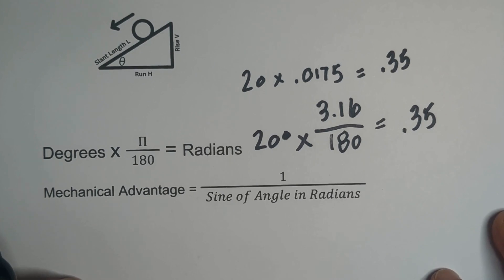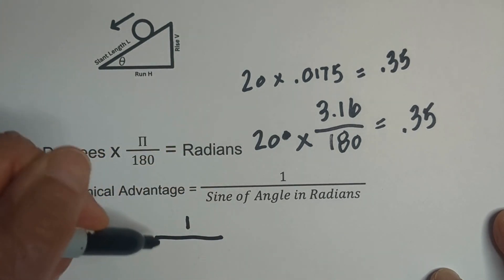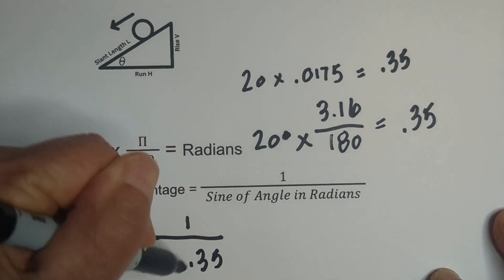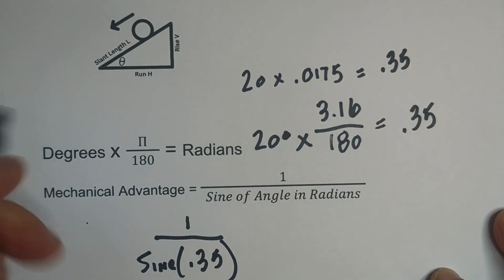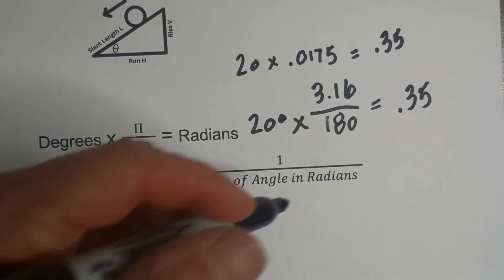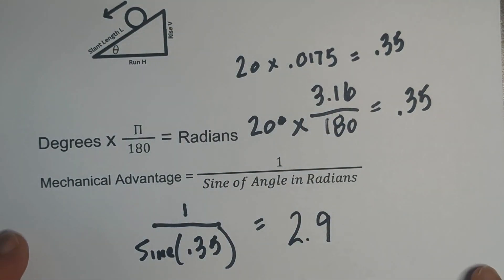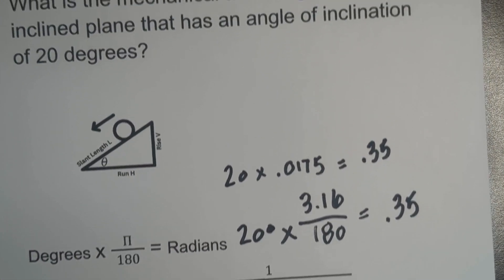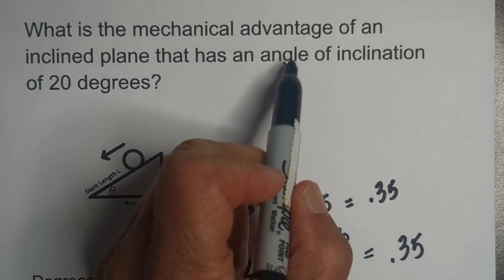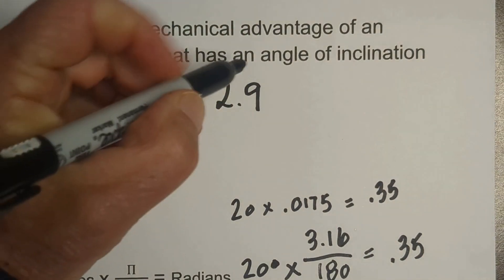Now we're going to take this and plug it into the other formula. We're going to go one divided by the sine of 0.35. You'll use a calculator for this. And when you do that, you get 2.9. So whenever you have an inclined plane that has an angle of inclination of 20 degrees, you're going to get a mechanical advantage of 2.9.